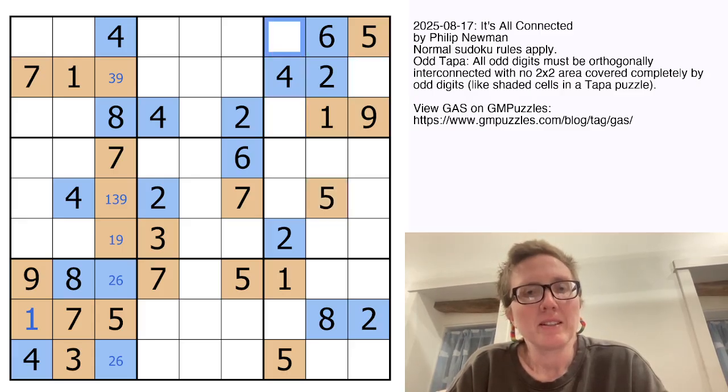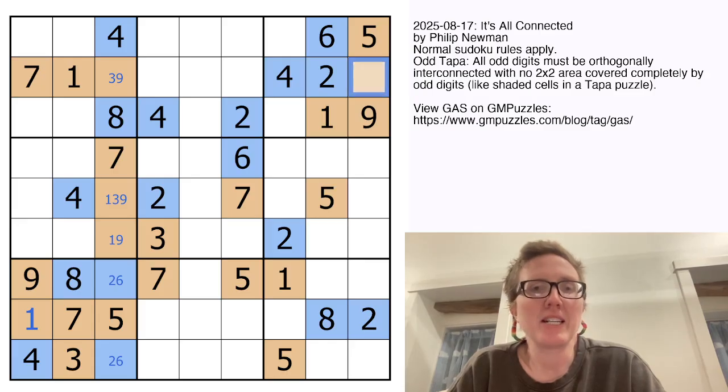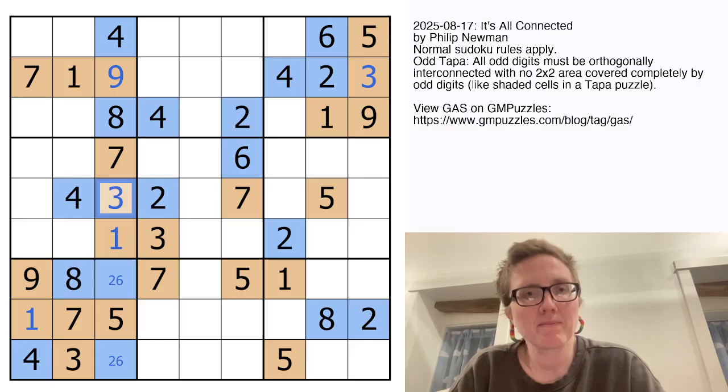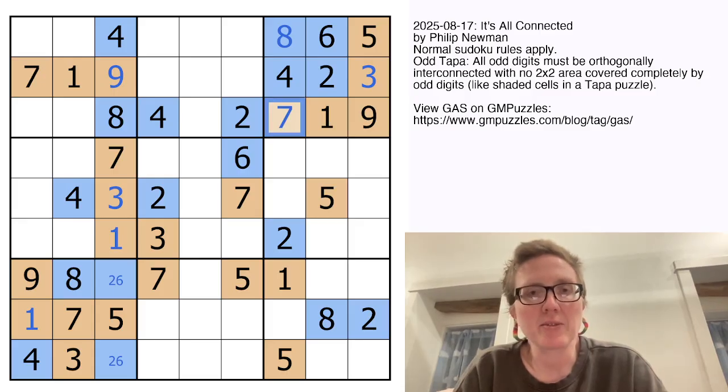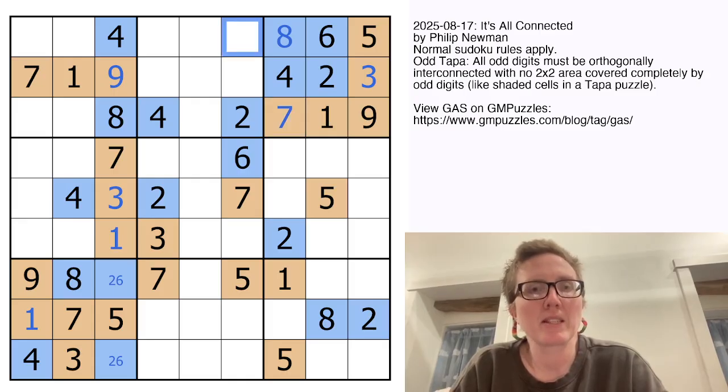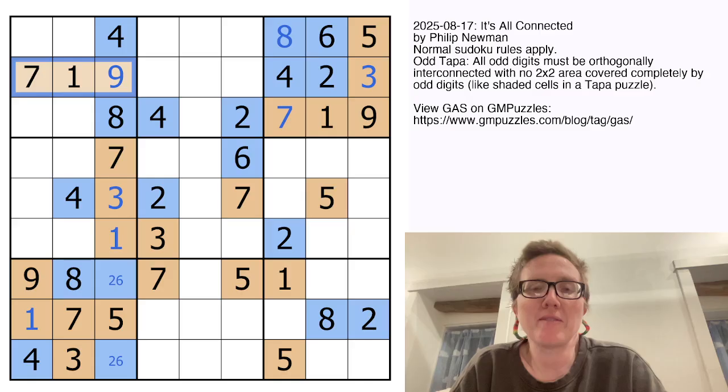Now we need an odd digit to connect this five up to everything else. So this is going to be odd. And it can't be one, five, seven, or nine. So it must be a three. That makes this a nine and resolves these digits. Now eight can't go here. So eight must go right here. So that's going to be even, which is an eight. And that's going to be our last odd digit there, which is a seven.